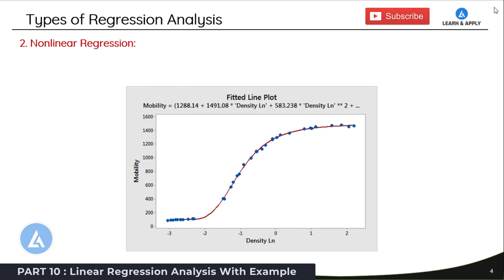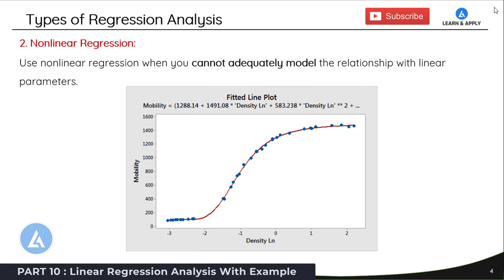The second type of regression analysis is nonlinear regression analysis. As the name indicates, in this type of regression analysis we go into detail to identify what kind of relationship exists between the variables. We are not just interested in identifying the linear relationship between variables, but the more detailed relationship between them. Use nonlinear regression analysis when you cannot adequately model the relationship with linear parameters.